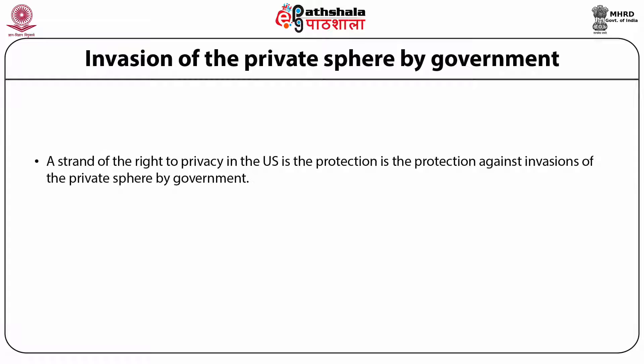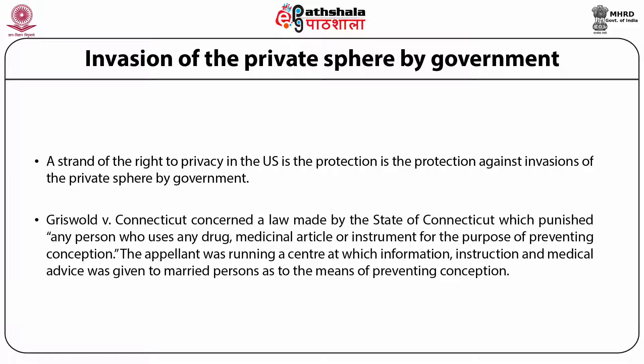In the US, the courts have been very strict when it comes to invasion of the private sphere by the government. The landmark case is the controversial Griswold v. Connecticut. The state of Connecticut punished any person who used any drug, medicinal article or instrument for the purpose of preventing conception. The appellant Griswold ran a center — Planned Parenthood — where information, instruction and medical advice was given to married persons as to the means of preventing conception.